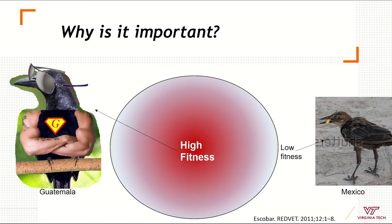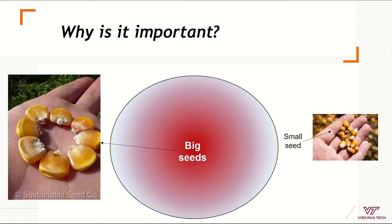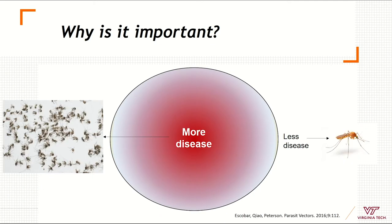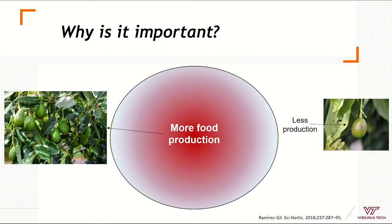Species with higher fitness will be more resilient and resistant to environmental change. We could also expect influences of niche structure and distance to the centroid on different species traits, for example body size or seed size. This could also be important for understanding how distance to the niche can explain different patterns of disease prevalence or incidence across the distribution — for example, of vectors of infectious diseases. The center of the niche could also be used to explain where we expect more agricultural production compared with the edges of the niche of specific crops.